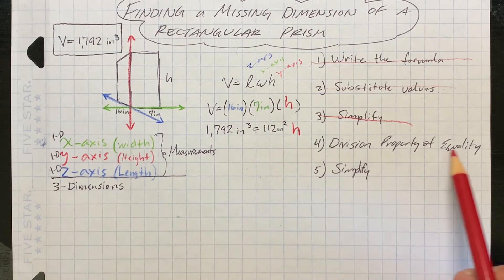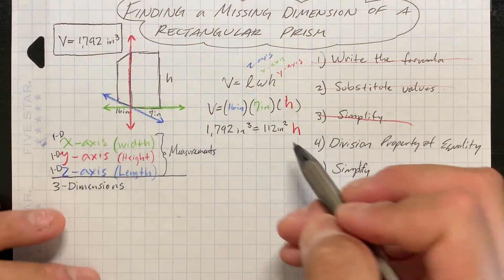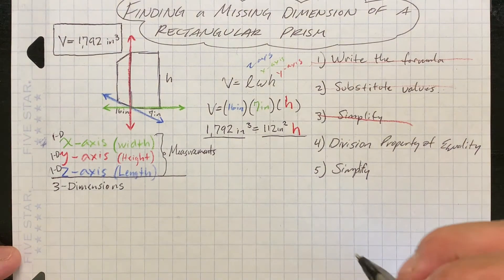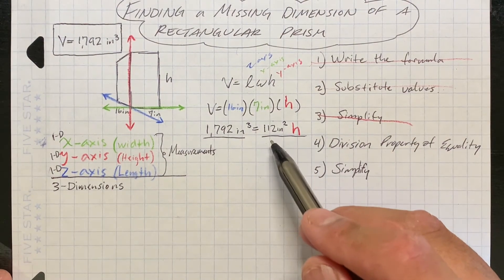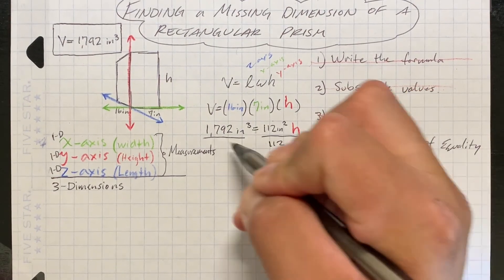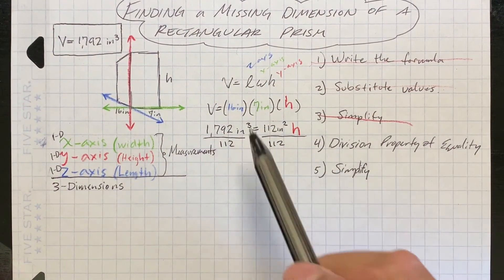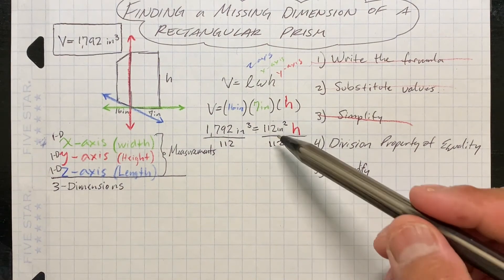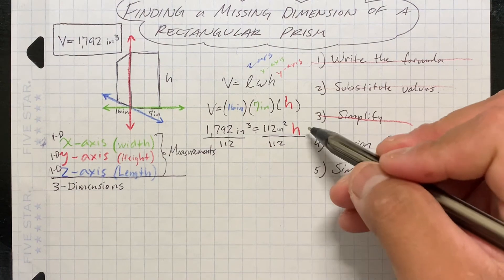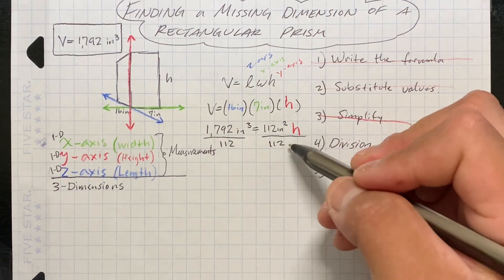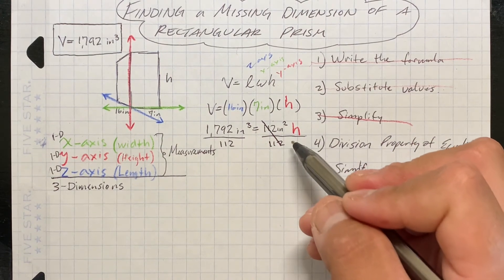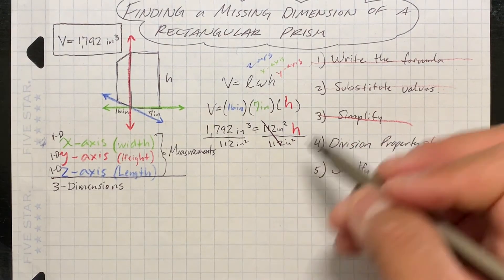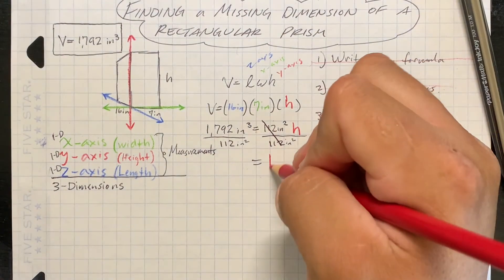Now we use the division property of equality — just like with algebraic expressions. To isolate the variable h, divide both sides of the equation by 112. 112 divided by 112 equals 1, so that cancels out, and what's left behind is the value for h.